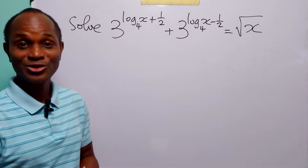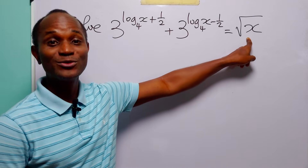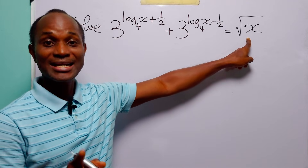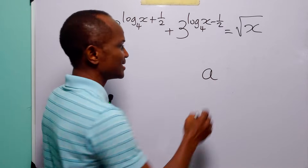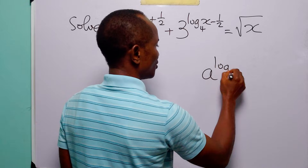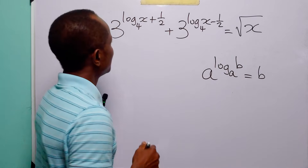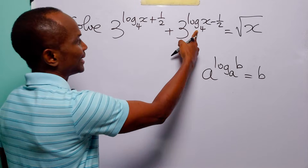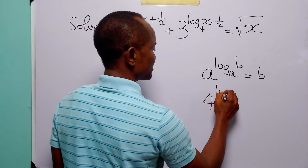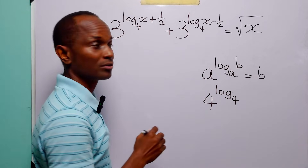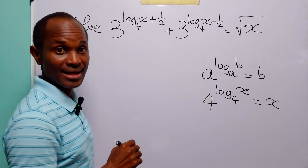Now, the trick to solving this equation is to rewrite the square root of x. Let us remember that when we have a number a raised to the power log base a of b, that this is equal to b. Since we are already working in base 4, let us have 4 raised to the power log base 4 of x. Of course, we know that this is equal to x.